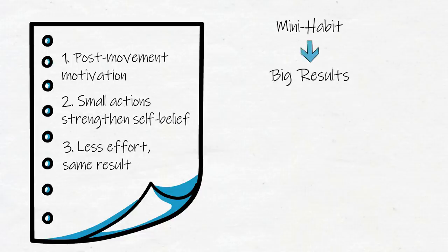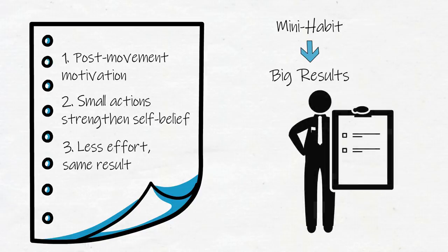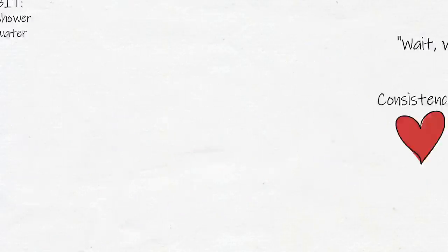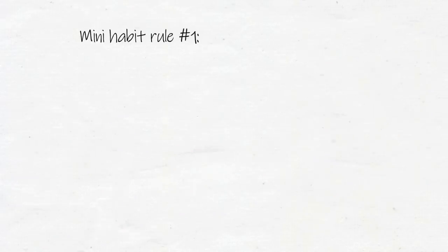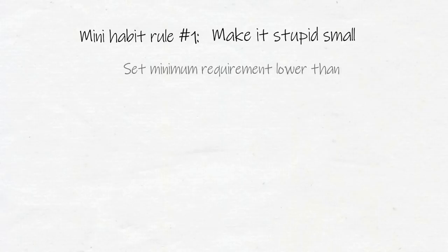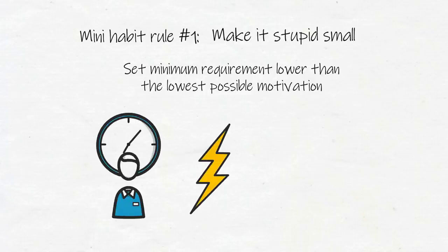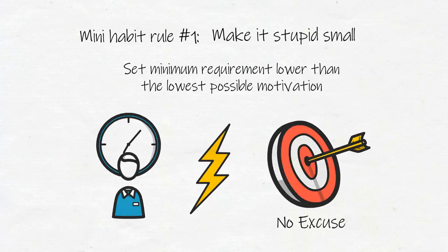Mini-habit rule number one: make it stupid small. Set your minimum requirement lower than the lowest possible motivation so even on your worst days, you'll find the time and energy to do it. Remember the goal is to have no excuse not to do it.